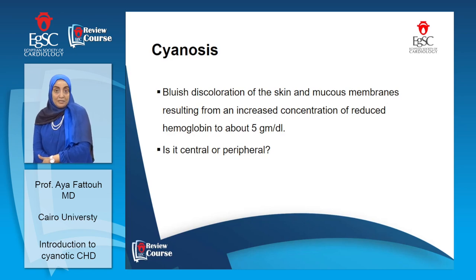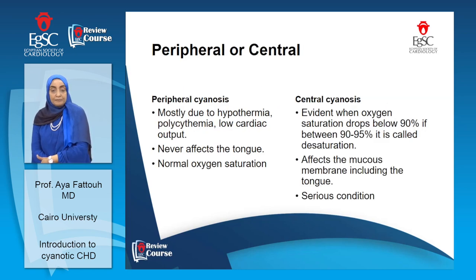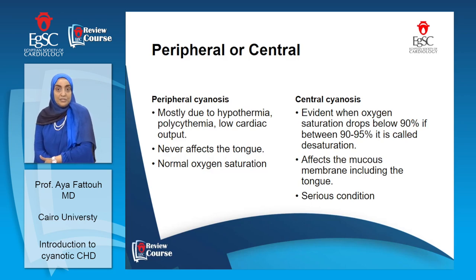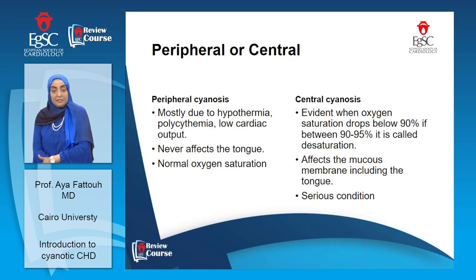The first question to answer is: is it central or peripheral? The peripheral cyanosis is mostly in the extremities — it never affects the mucous membranes and the tongue, and if we measure the oxygen saturation we will find it normal. While central cyanosis affects the mucous membranes, the oxygen saturation will be decreased, and it is a serious condition.